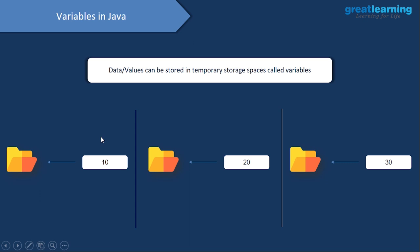A variable is a temporary storage space, so once you store a value, that value can actually be changed. Initially I store 10 inside the variable, then I change it to 20, and later to 30. So a variable helps you to change values inside it. Let's go to Eclipse and work with this.